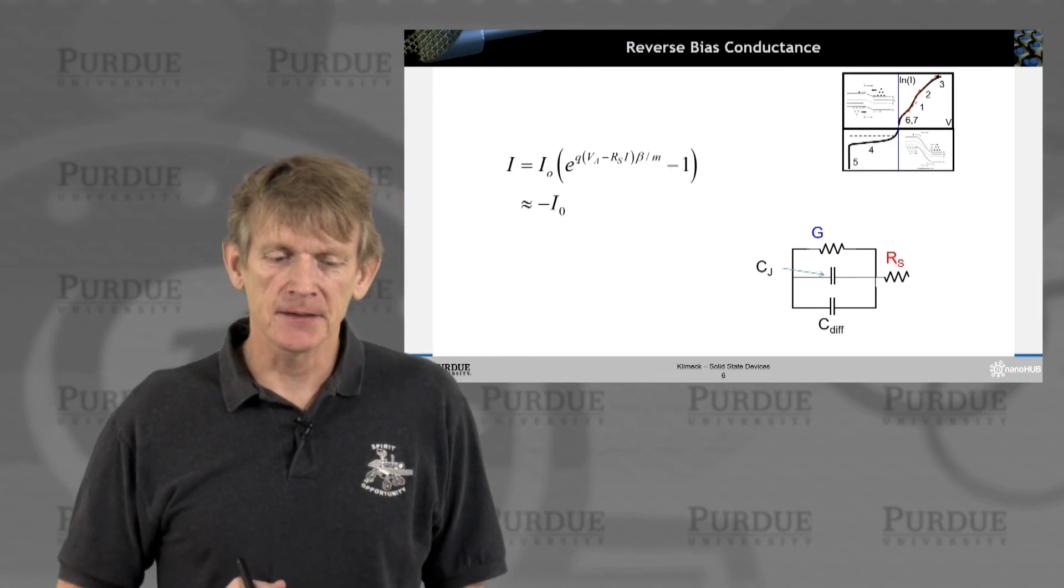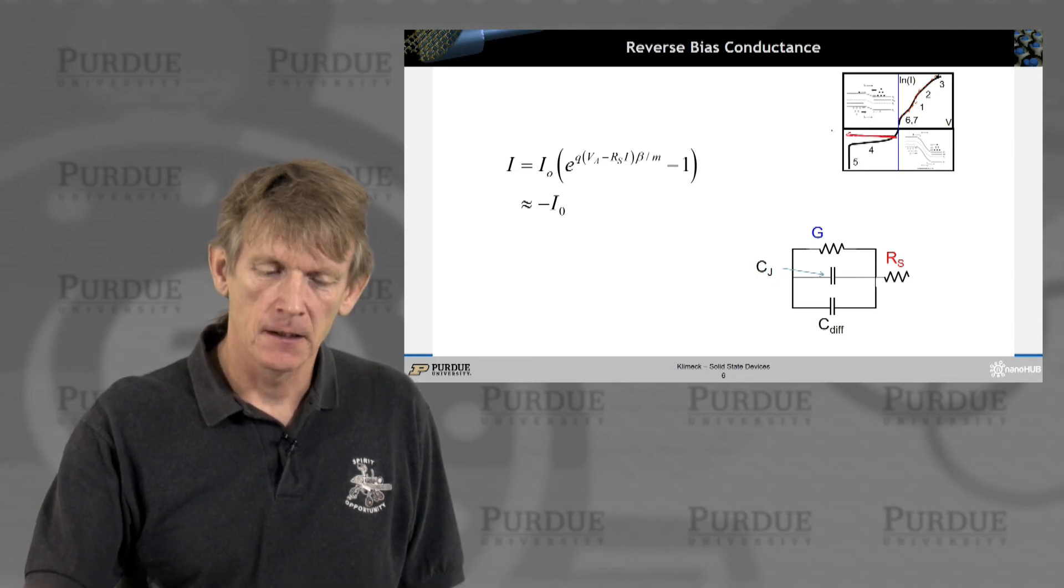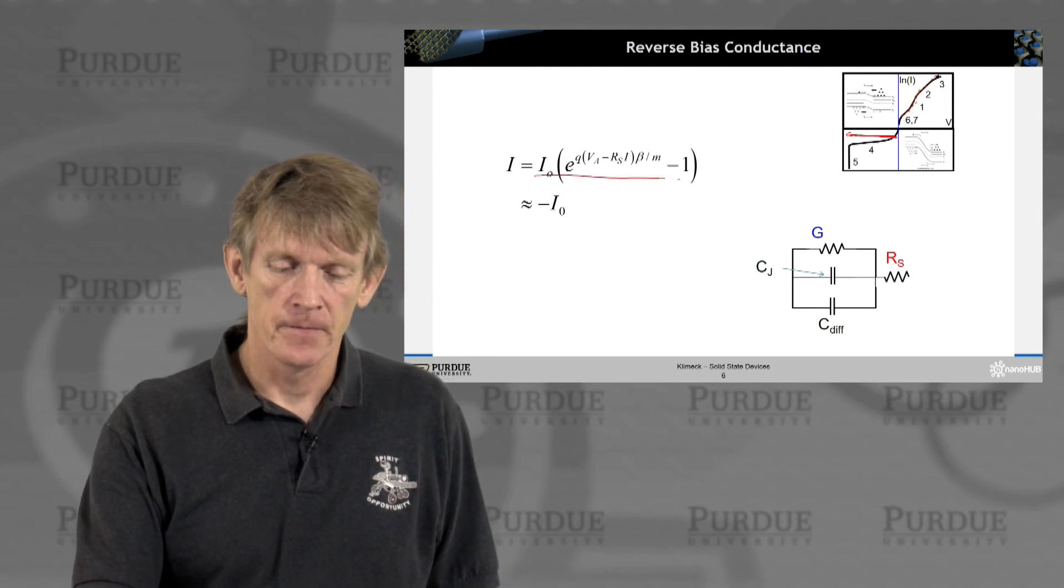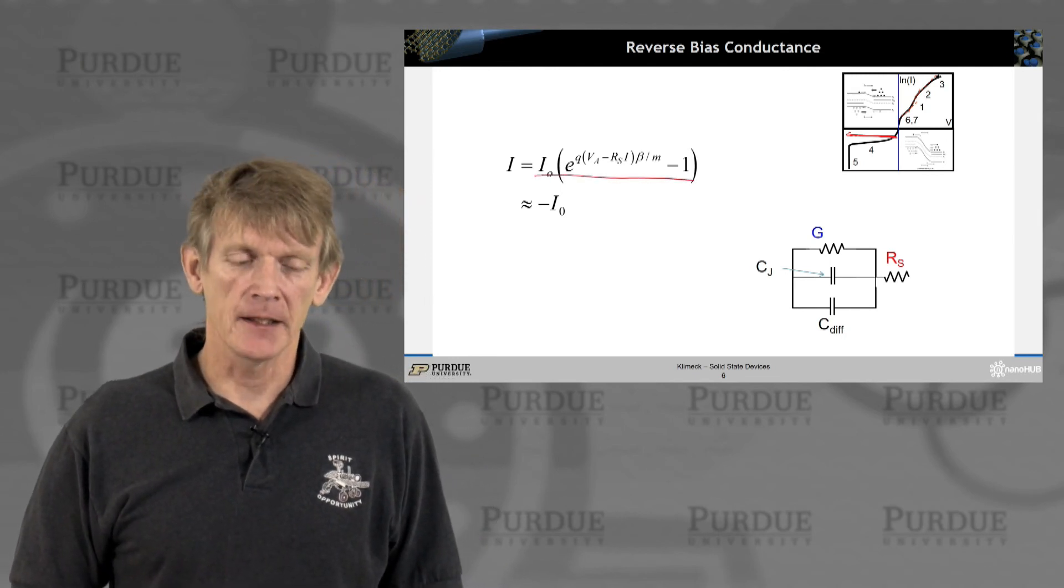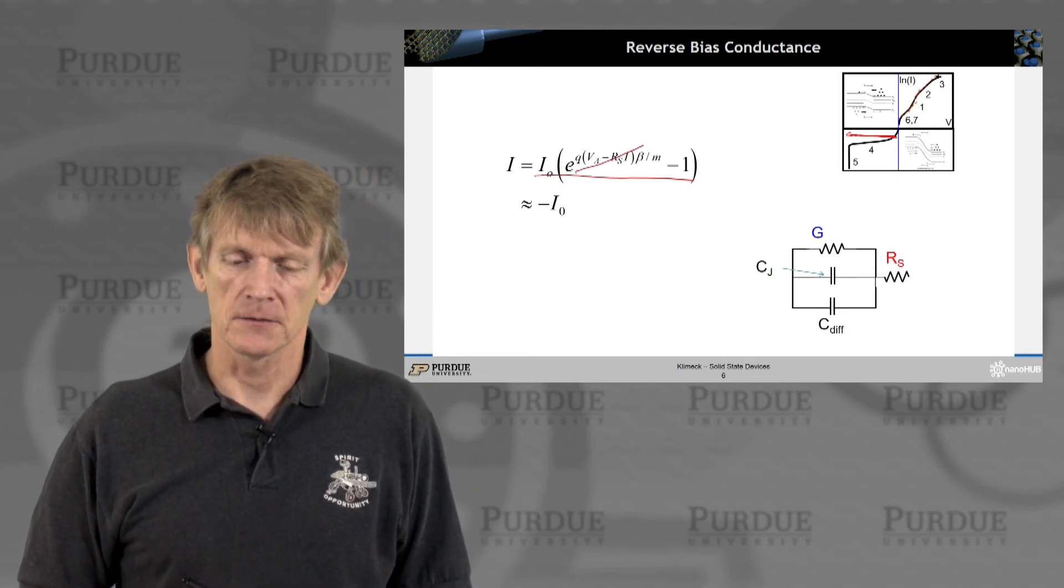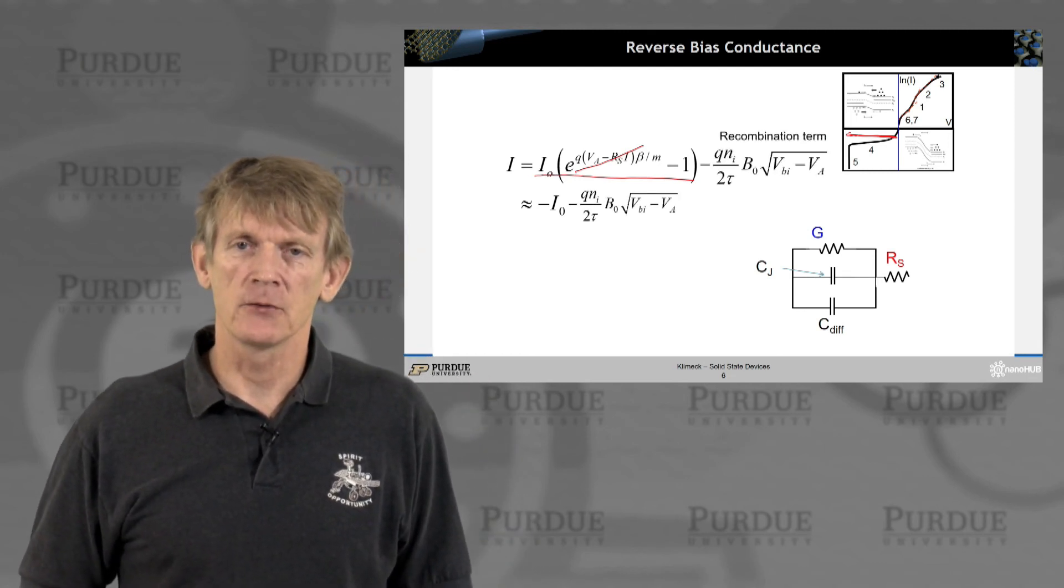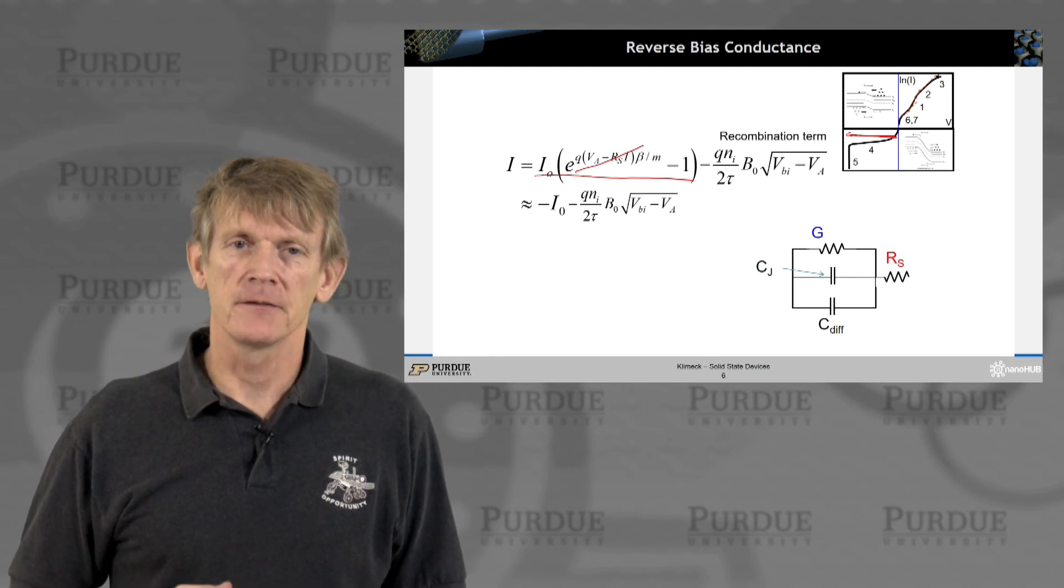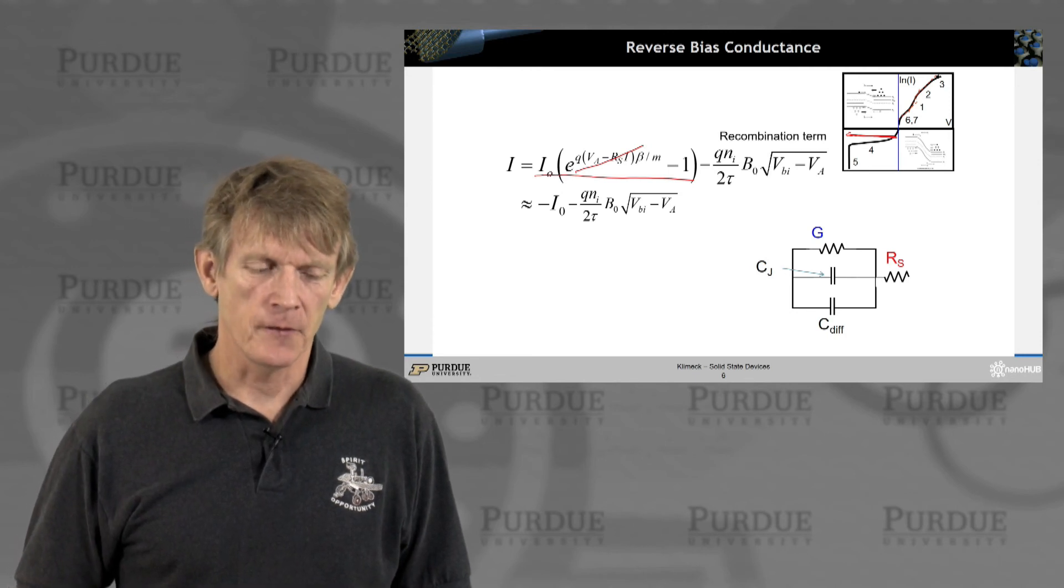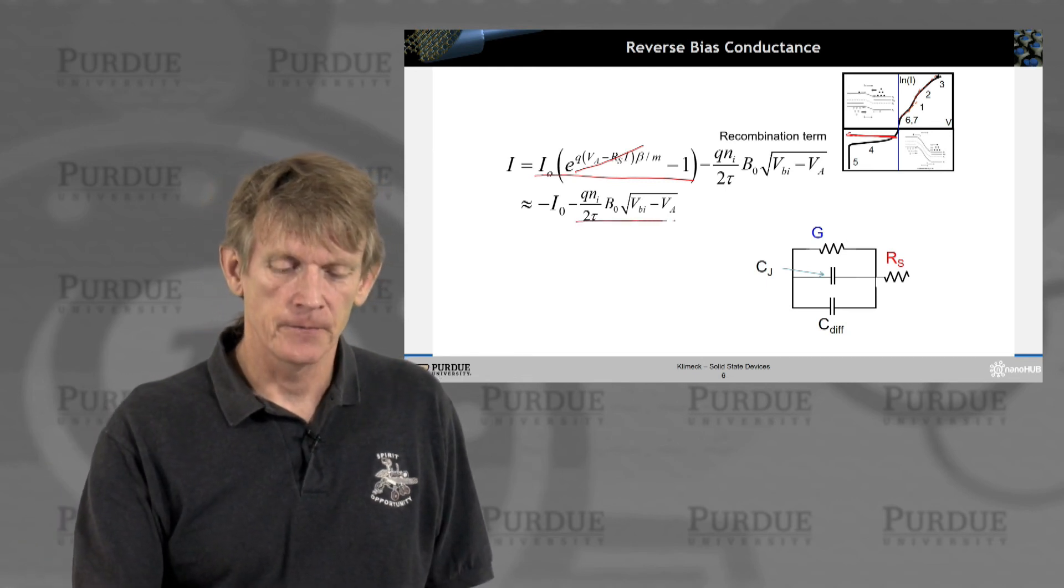Now let's look at the reverse bias conductance. In the ideal case, we had already identified that out of this expression here with the complex exponential minus 1, if you're in a negative bias, you can forget about this exponential and you end up with a constant. If you have a recombination term in the expression, if you have recombination in the junction, you basically generate carriers and therefore you increase the reverse current and you have this voltage dependence here.